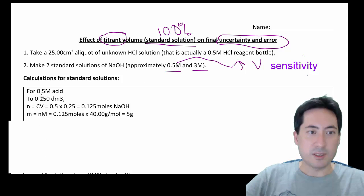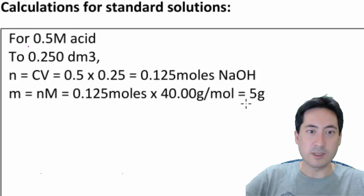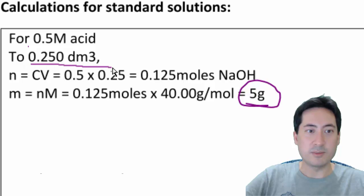So in order to do this, I've just done a quick calculation here. So I've got, well how much, what sort of weight am I going to look at? It's going to be around 5 grams. So I've taken, I'm going to use a 250 mL volumetric flask and so I need to know how many grams to add.